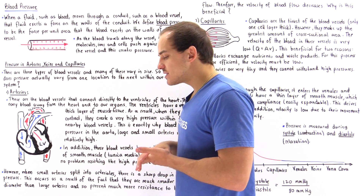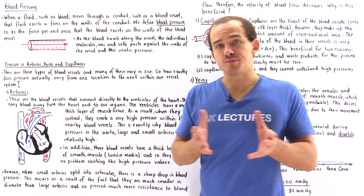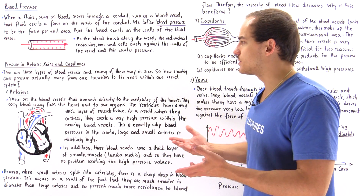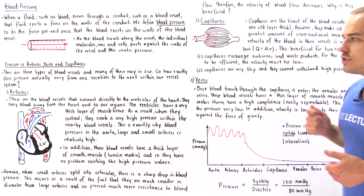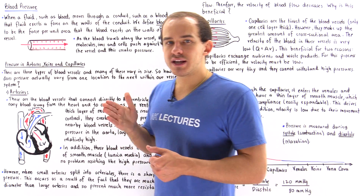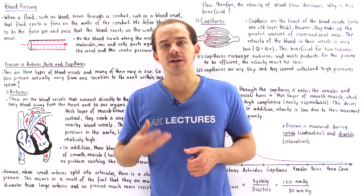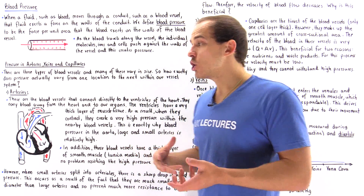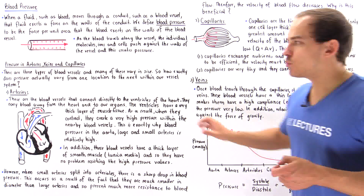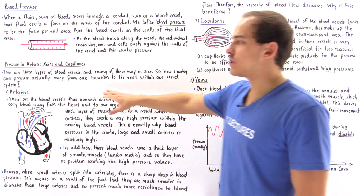In our cardiovascular system we have different types of blood vessels — we have large and small arteries, large and small veins, and we also have capillaries. The question is why there is a pressure variation between one location and a different location inside our blood vessel system. We're going to discuss why there is a difference in pressure between arteries, veins, and capillaries, and let's begin with arteries.